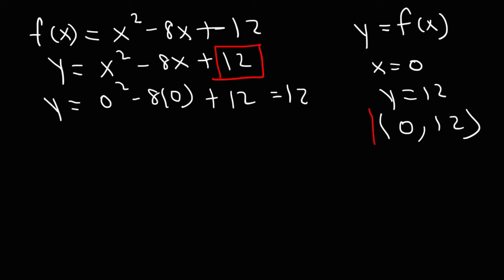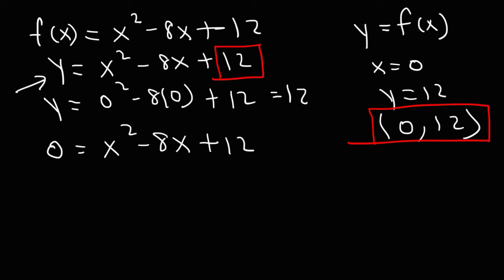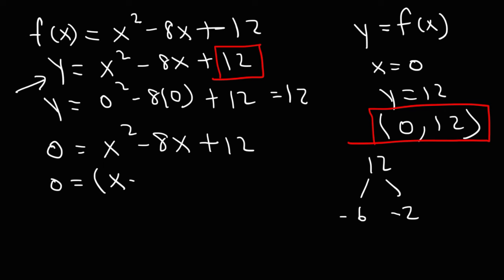That's the y-intercept. Now to find the x-intercept, replace y with 0. So we have 0 equals x squared minus 8x plus 12. We now have a quadratic equation, and to solve for x we can factor or use the quadratic formula. We need two numbers that multiply to 12 but add to negative 8. Negative 6 and negative 2 work, so it factors to (x minus 6)(x minus 2).